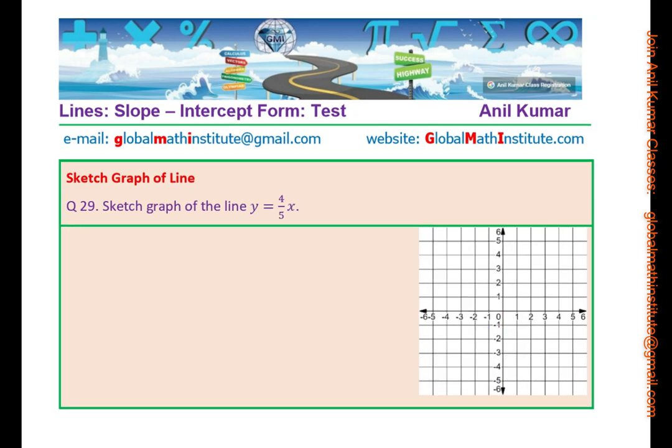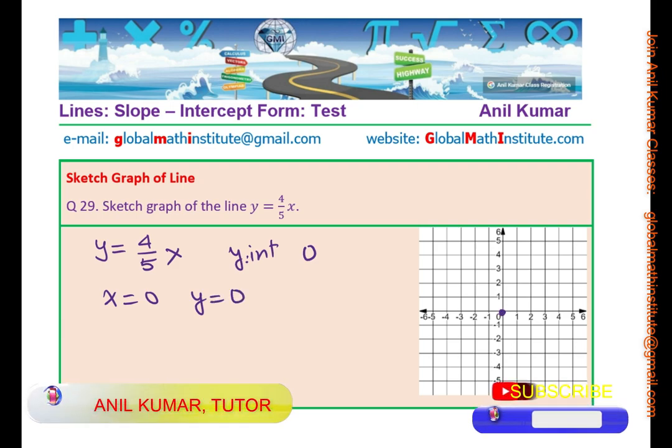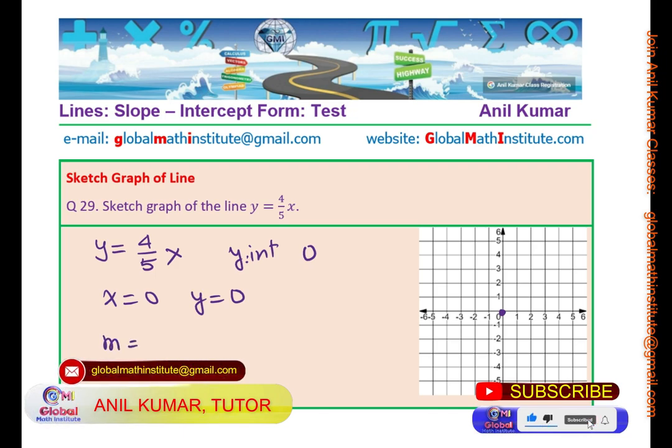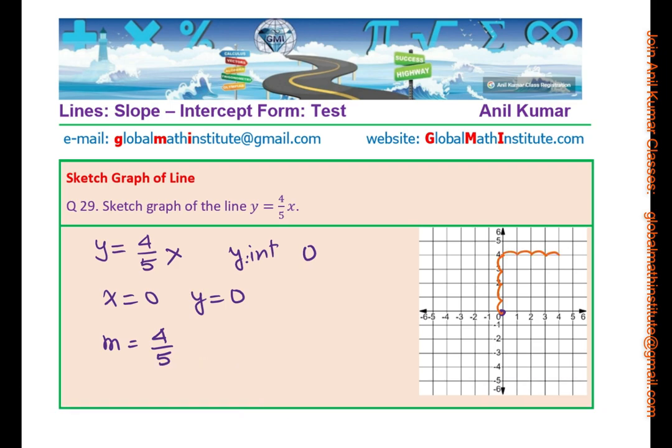Now we have another equation for you, which is y equals to 4 by 5x. What is the y-intercept in this case? Y-intercept in this case is at 0, because if x equals to 0, y is also equal to 0. So we will mark 0 as one of our critical points. Now, what is the slope? M, the gradient, is 4 over 5. Means you go 4 up and 5 right. So you go 1, 2, 3, 4, 1, 2, 3, 4, 5. So you have that point now connected to draw the given line. We have this line perfect. That is how you could do it.